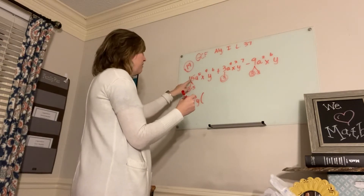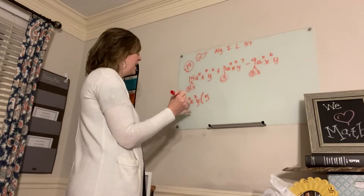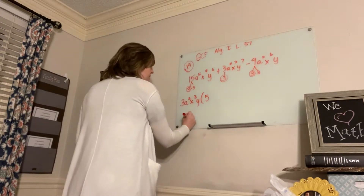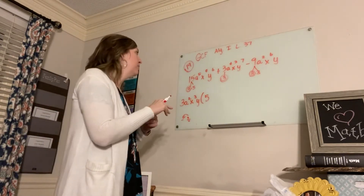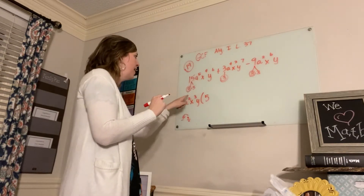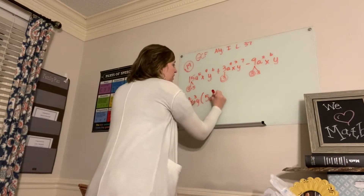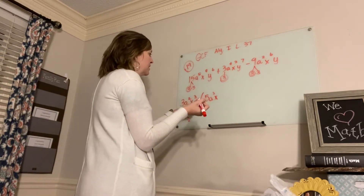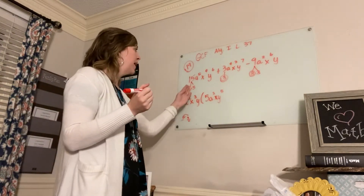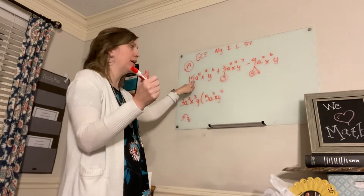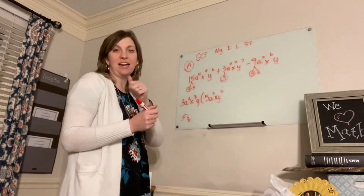So if I take out 3, 15 divided by 3 is 5. A squared divided into A to the 5th — if I'm dividing A to the 5th by A squared, the exponent rule says I subtract exponents. So 5 minus 2 is A cubed. Then I have X to the 4th divided by X to the 3rd, which leaves me X to the 1st, or just X. Y to the 6th divided by Y — this is understood 1 — so 6 minus 1 would be Y to the 5th. You can always distribute back to check: 5 times 3 is 15, 2 plus 3 is 5, 3 plus 1 is 4, and 1 plus 5 is 6. We got the first term right.